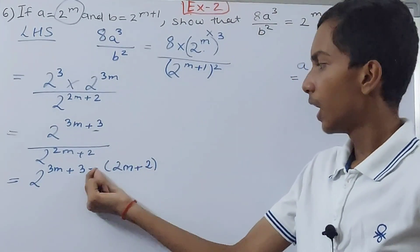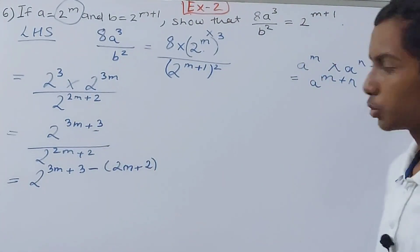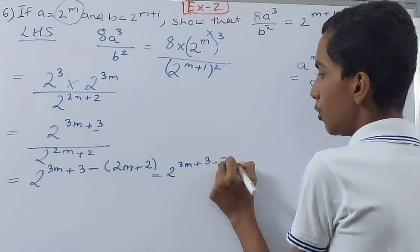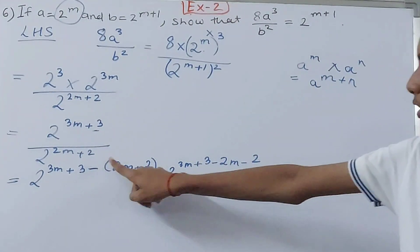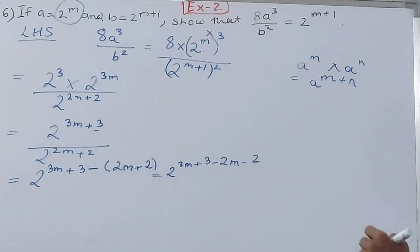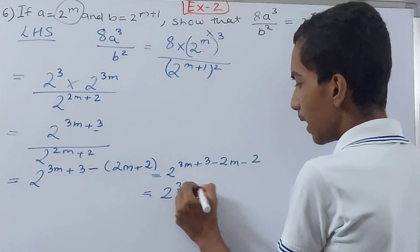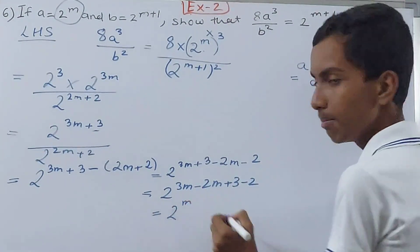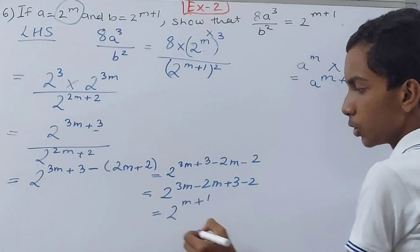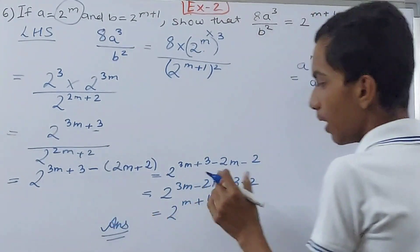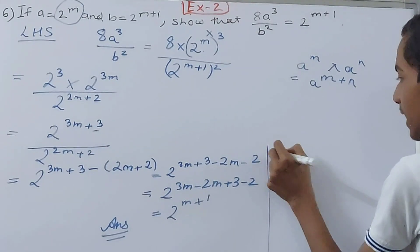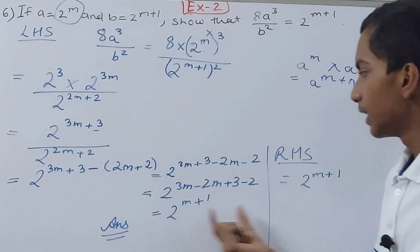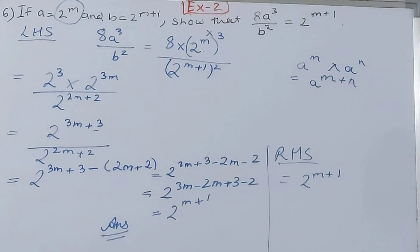So we get 2 to the power 3m plus 3 minus 2m minus 2. Now collecting like terms: 3m minus 2m equals m, and 3 minus 2 equals 1. So we get 2 to the power m plus 1. On the right-hand side we already have 2 to the power m plus 1, so both sides are equal — we have proved it!